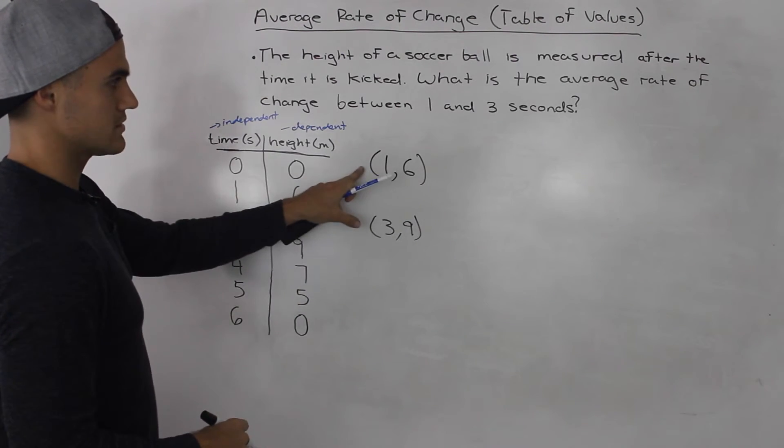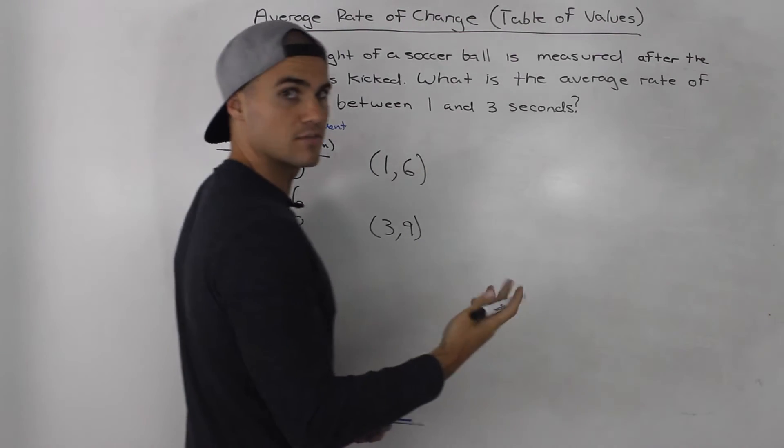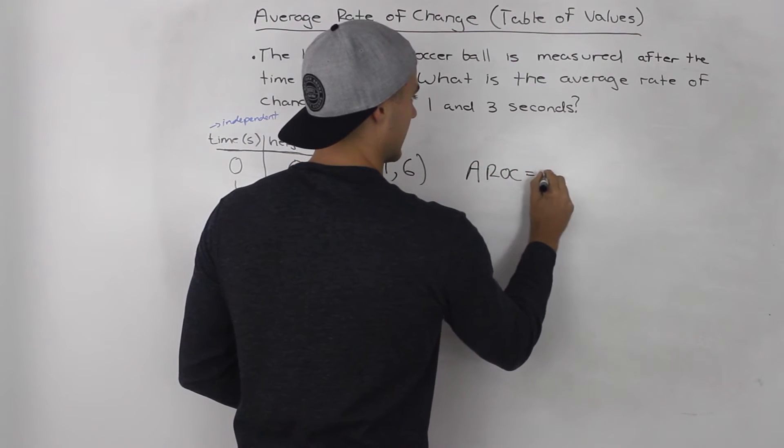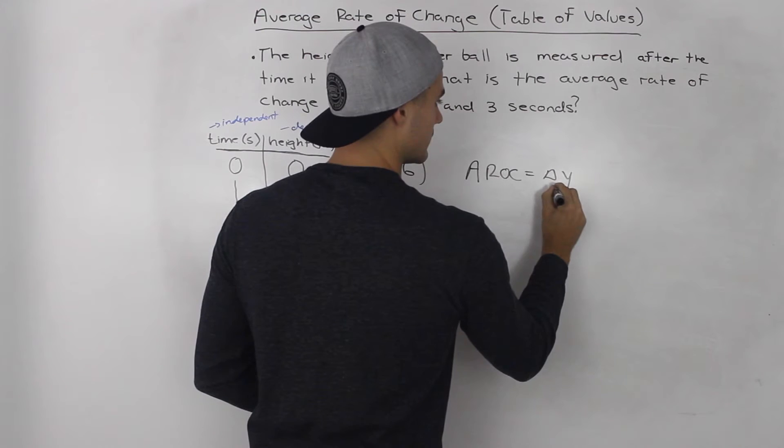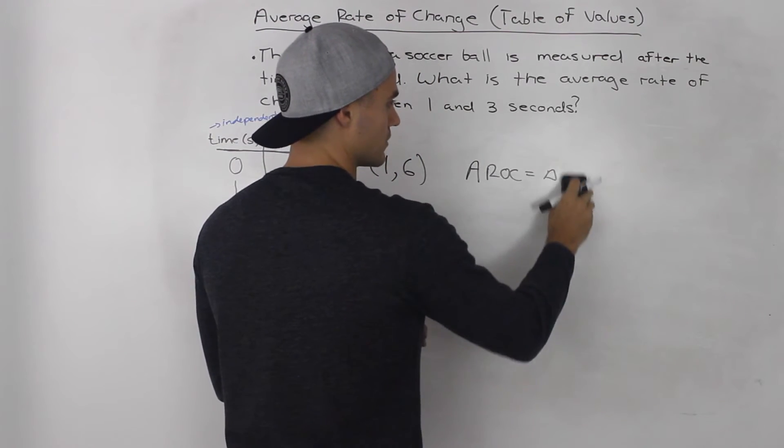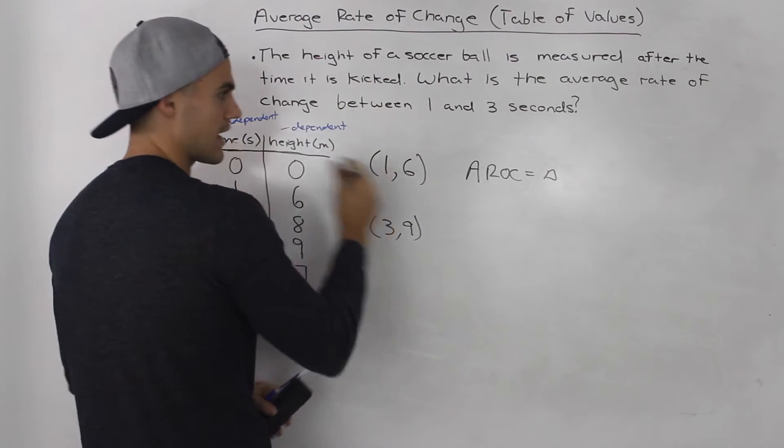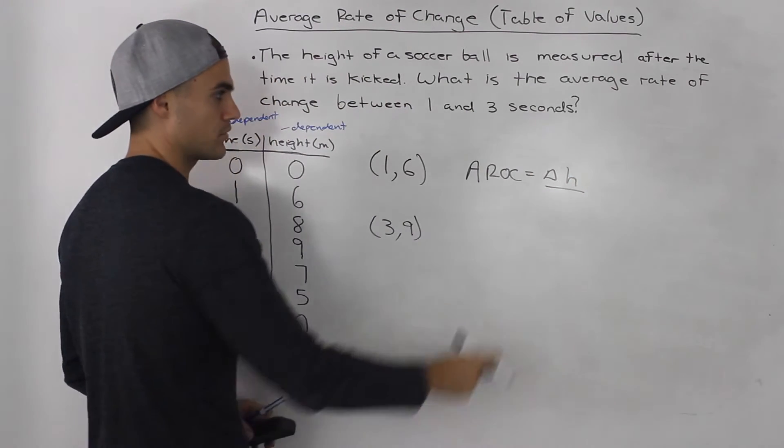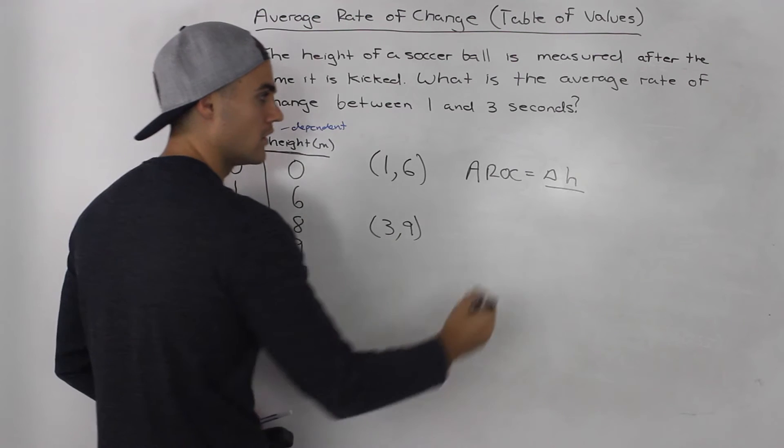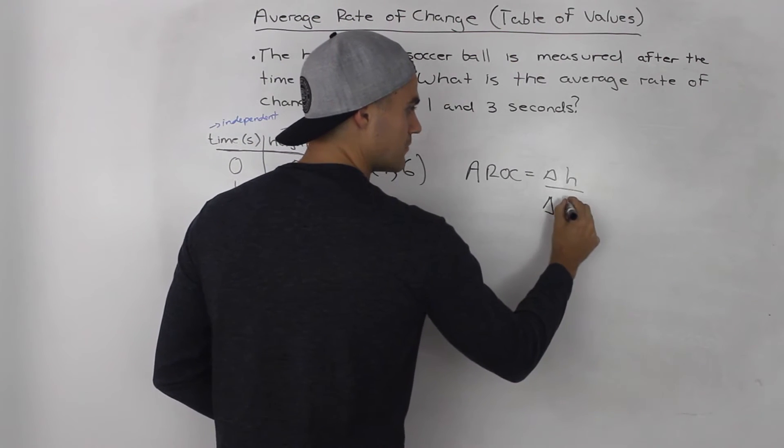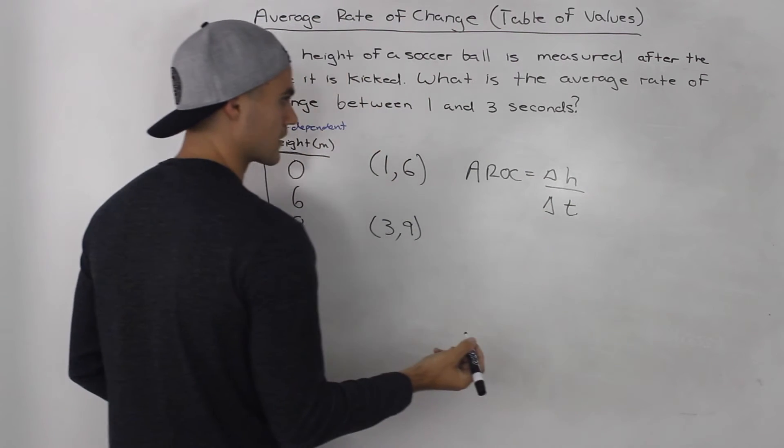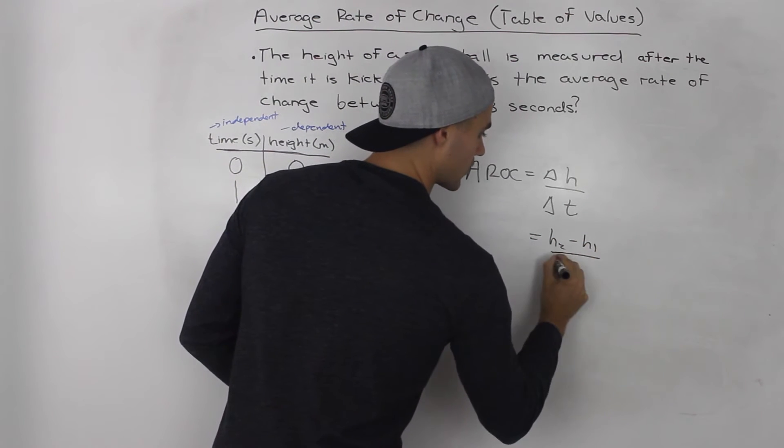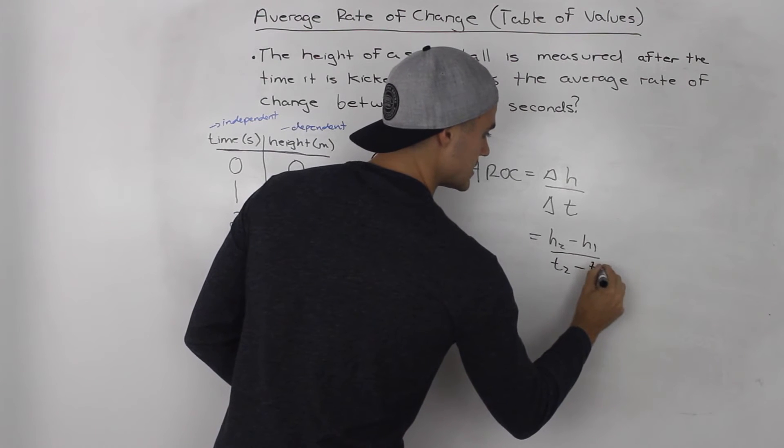We have these two points. As we mentioned in the video before, the average rate of change is the change in the dependent variable, delta y. Let's actually put delta h in this example, because the height is the dependent variable, over the change in the variable, which is the time. This would be h2 minus h1 over t2 minus t1.